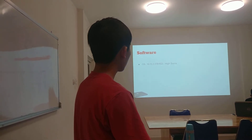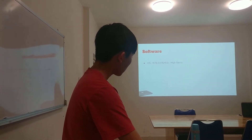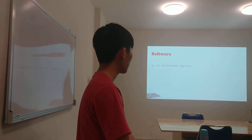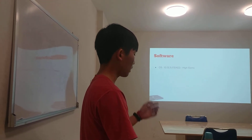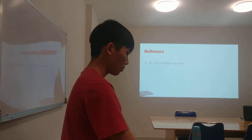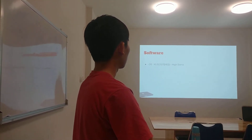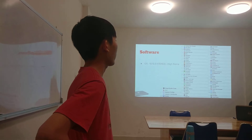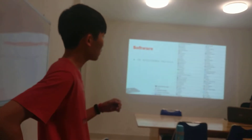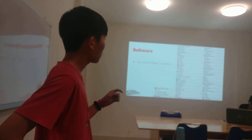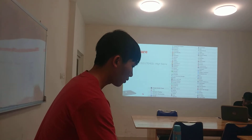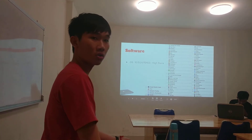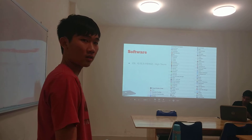So let's look at the software. I'm currently running macOS 10.15.3, which is Catalina, build ID 19D102. And here are the list of software I have on my computer, excluding a few which are inside the utilities folder, which I can show you later if you want.